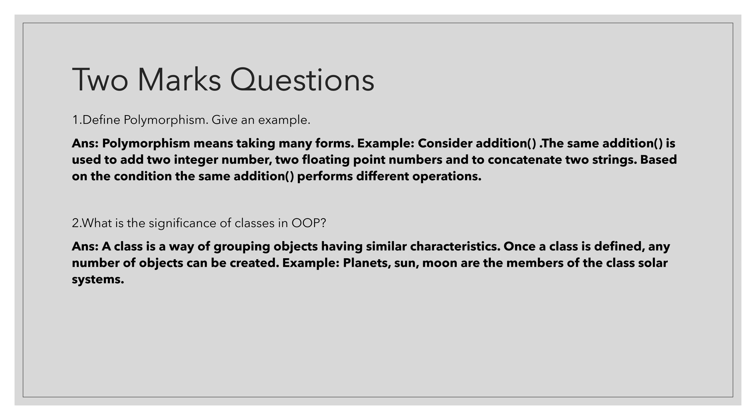Second question is, what is the significance of classes in OOP? A class is a way of grouping objects having similar characteristics. Once a class is defined, any number of objects can be created. An example for this is planets, sun and moon are the members of the class solar systems.